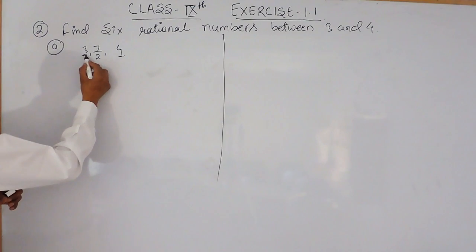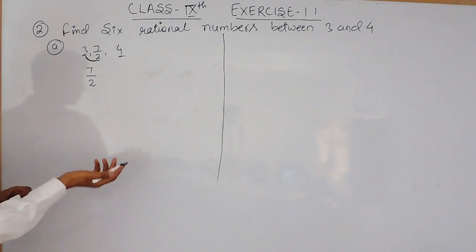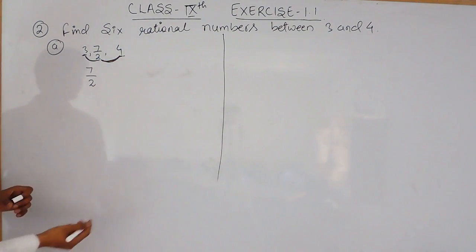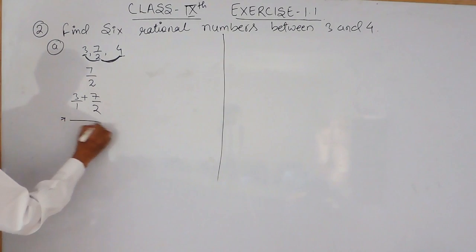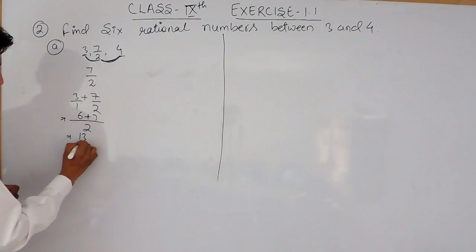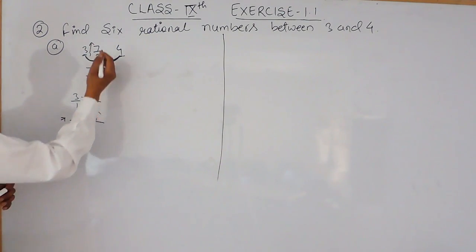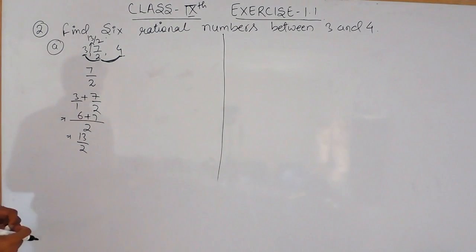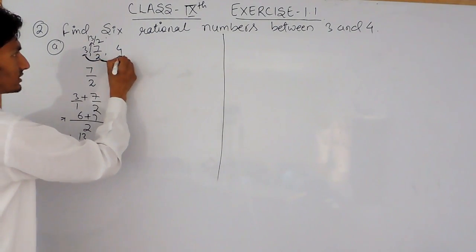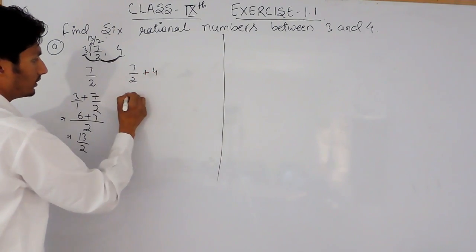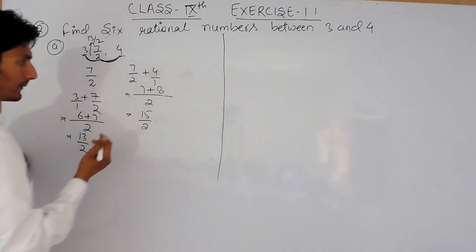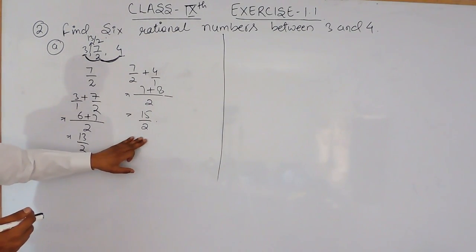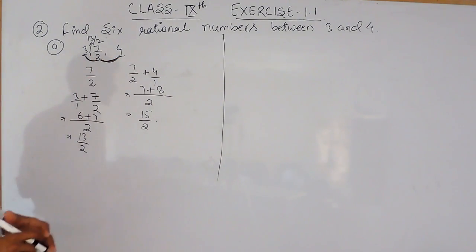Now if you want to find another rational number, you can either add 7/2 and 3 and divide by 2, or add 7/2 and 4 and divide by 2. So 13 by 2 will be another rational number between 3 and 4.